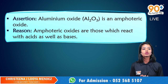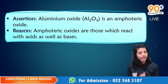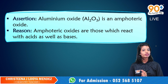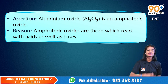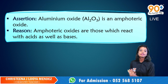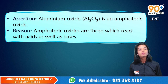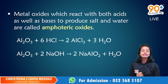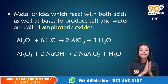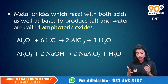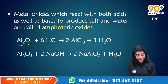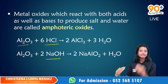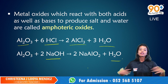Assertion: Aluminium oxide, Al₂O₃, is an amphoteric oxide. That is true — aluminium oxide is an example of an amphoteric oxide. Another example is zinc oxide. The reason states: Amphoteric oxides are those which react with acid as well as bases. That is the correct explanation for amphoteric oxides. Amphoteric oxides are metal oxides with exceptional properties — they can react with acid as well as base to form salt and water. Al₂O₃ can react with HCl as well as NaOH, i.e., acid and base, and they form salt and water. These are called amphoteric oxides.